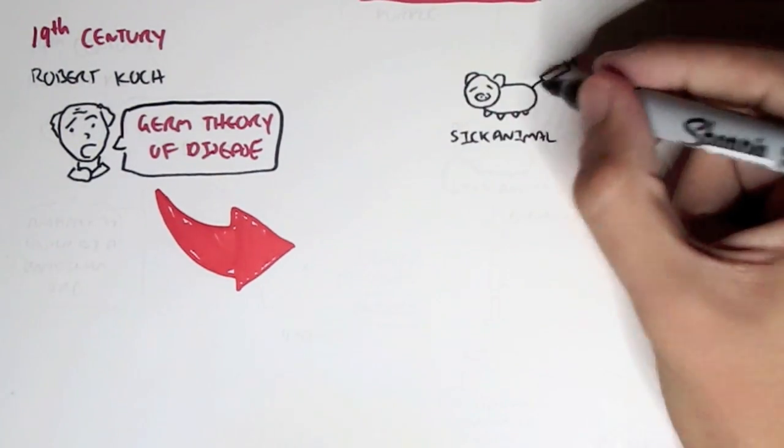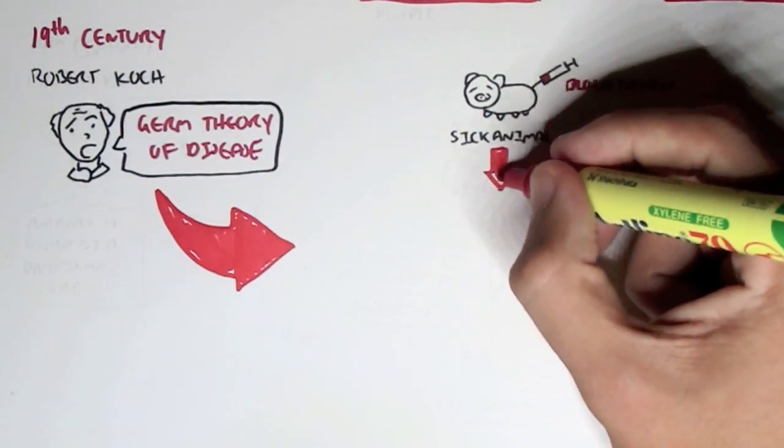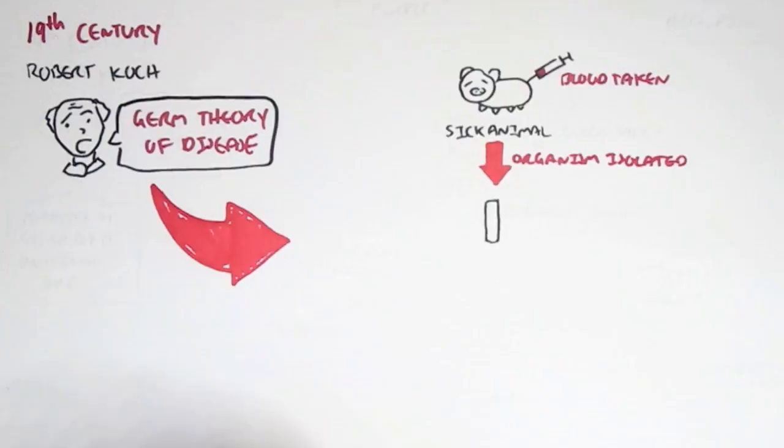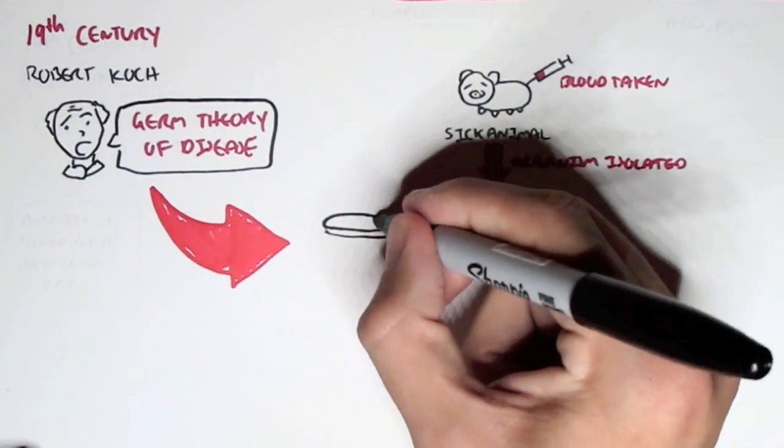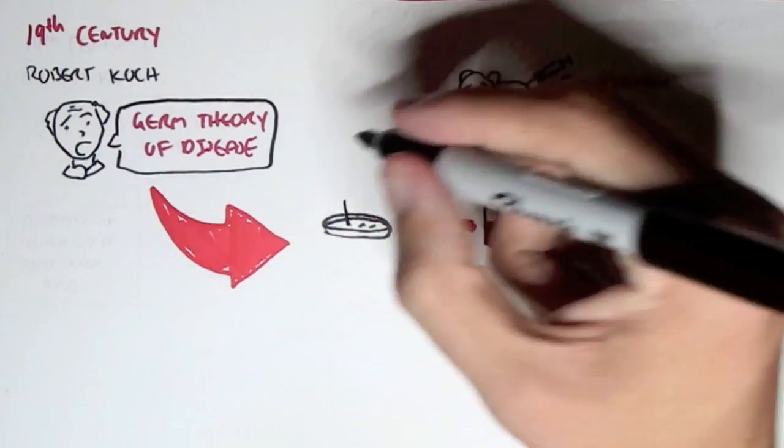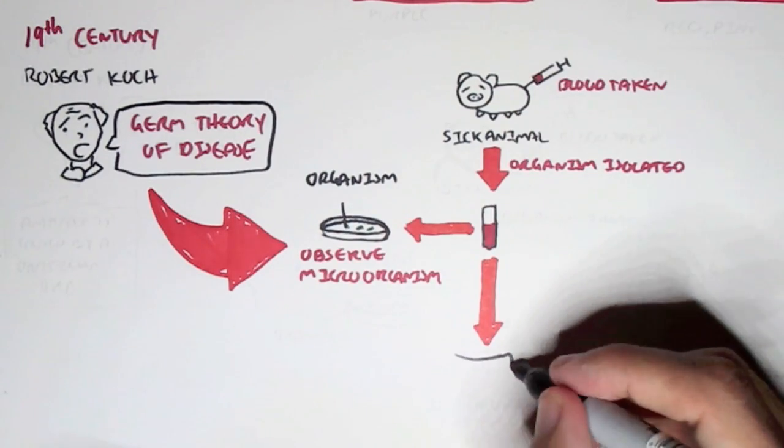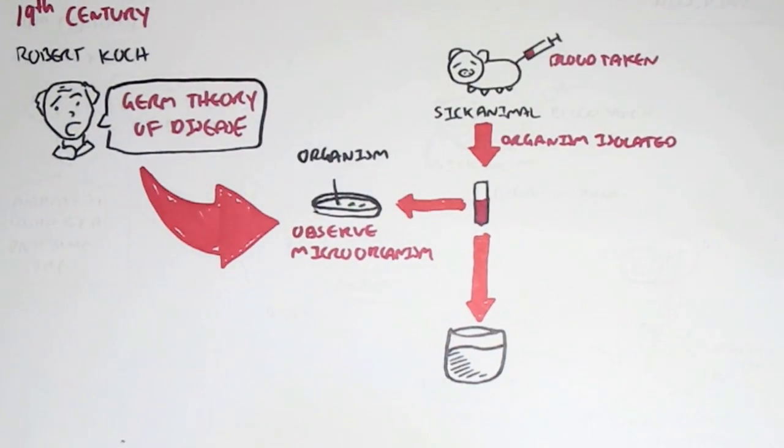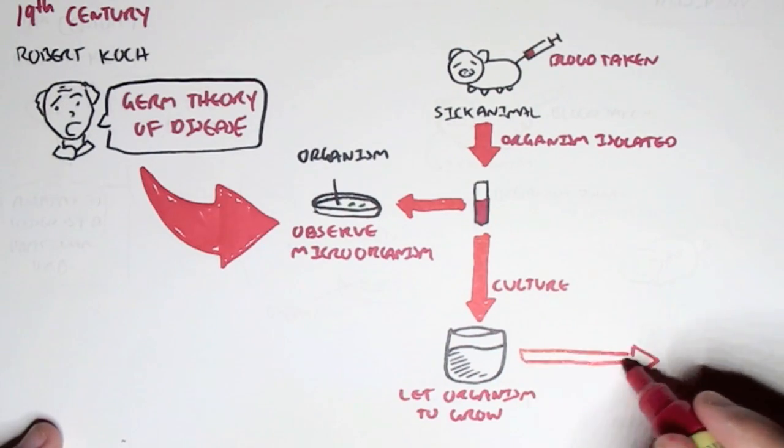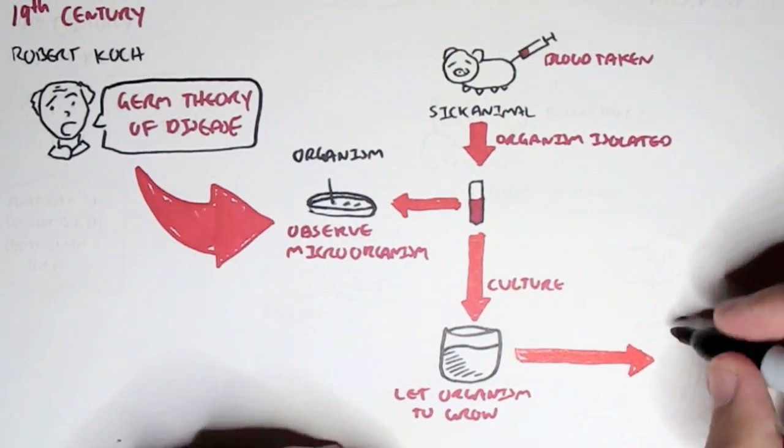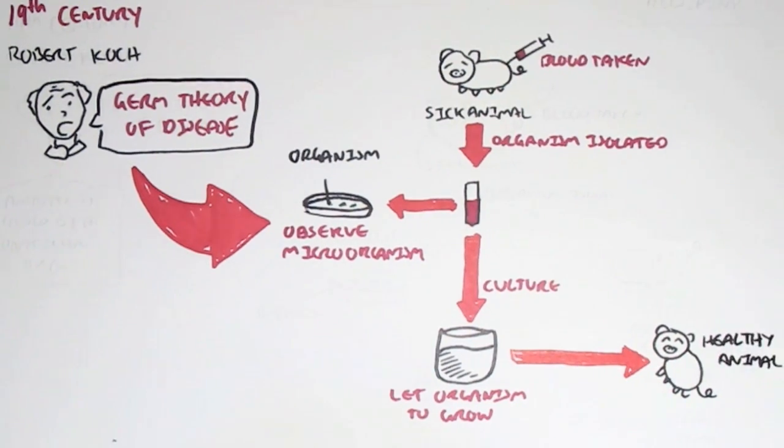And so there's a popular diagram to explain this situation or this theory, when, for example, a sick animal, you will obtain blood from a sick animal, and then we'll isolate this sample. And then we can actually observe it under a microscope. And we can observe microorganisms. And so if we take the same sample that was isolated and we actually culture it and let the organism to grow, after it's grown, we can then inject this microorganism into a susceptible host, such as a similar healthy animal.